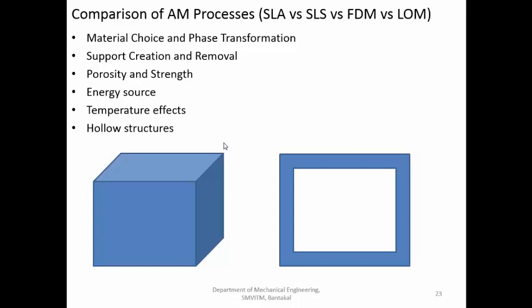The next parameter is support creation and removal. In SLA (stereolithography), support structures must be created. Whenever a support structure is needed, the UV laser intensity is reduced, so the support structure is created with lower strength. After the process, support structures must be removed using appropriate tools, and polishing or other finishing activities may be needed to improve surface finish.